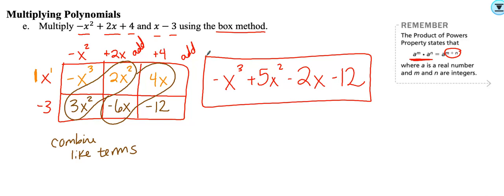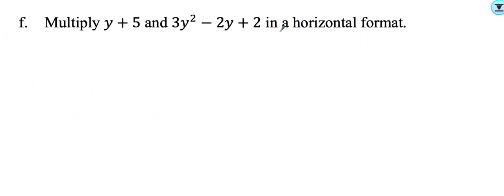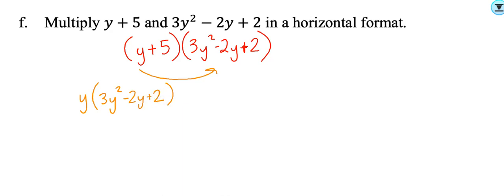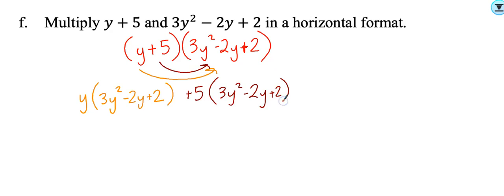I'll also teach you the horizontal format. So we need parentheses — your first polynomial is y plus 5, and your second is 3y squared minus 2y plus 2. When you're multiplying you are going to be distributing. The y is being multiplied to that entire polynomial, and then the 5 is also multiplied to that entire parenthesis. Your second parenthesis will always repeat.